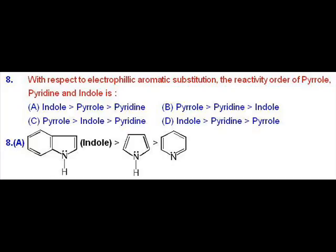Pyridine should be least reactive as it contains nitrogen which withdraws electrons towards it. Pyrrole should be more reactive because the lone pair of nitrogen is part of the aromatic sextet. And indole has an added benzene ring to it. The order should be indole maximum, followed by pyrrole, followed by pyridine.